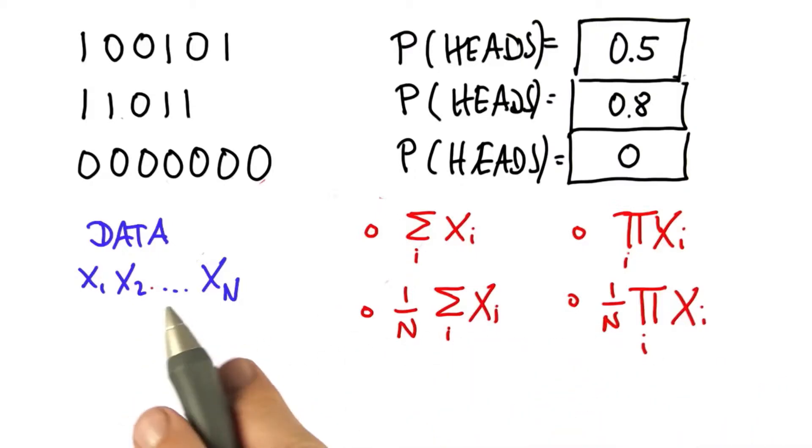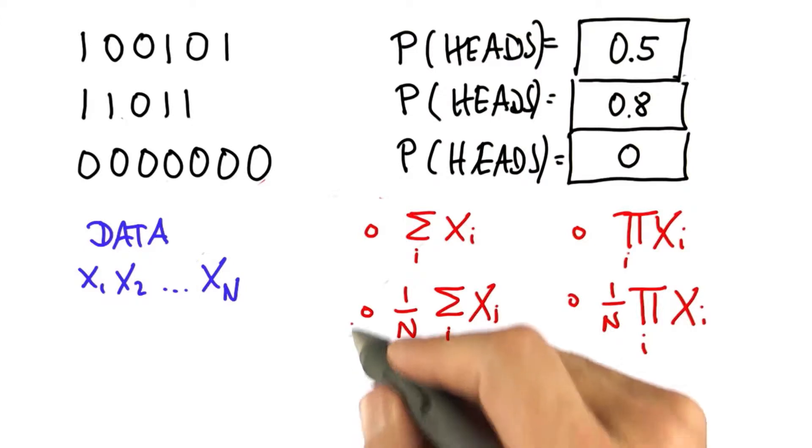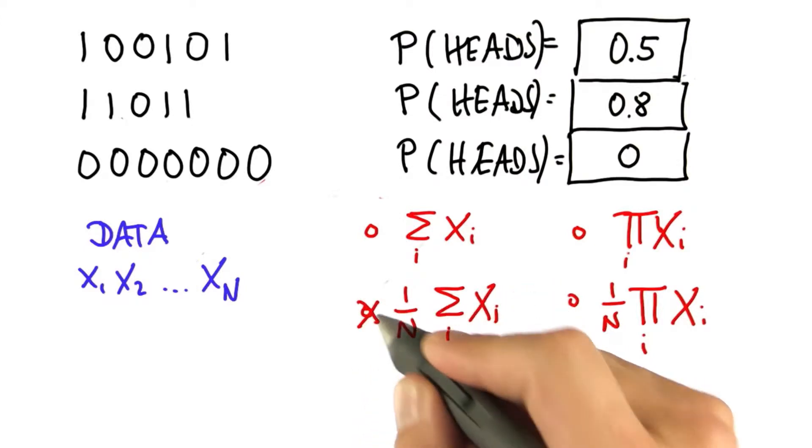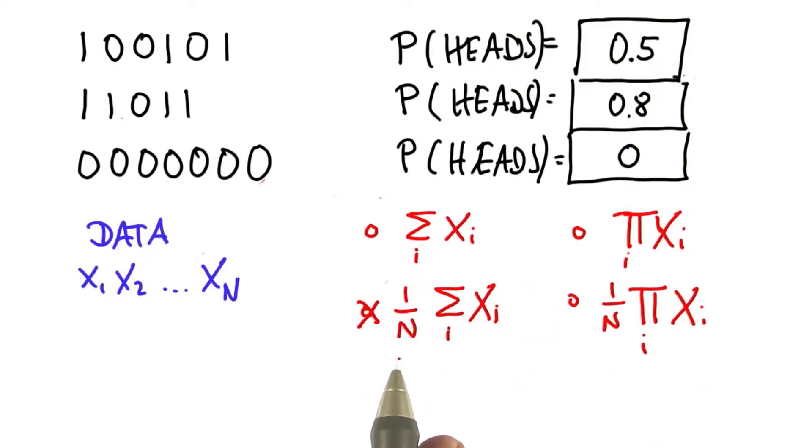And I'm sure you guessed this correctly. We're taking the sum of the outcomes, but we normalize by the total number of experiments. And because the outcomes are 0 and 1, this sum over here cannot exceed the value of n.